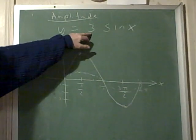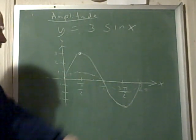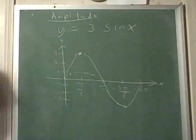Had it been one-fourth sine of x, it would only go up to one-fourth and then down to zero. So this controls how high and how low the sine goes.